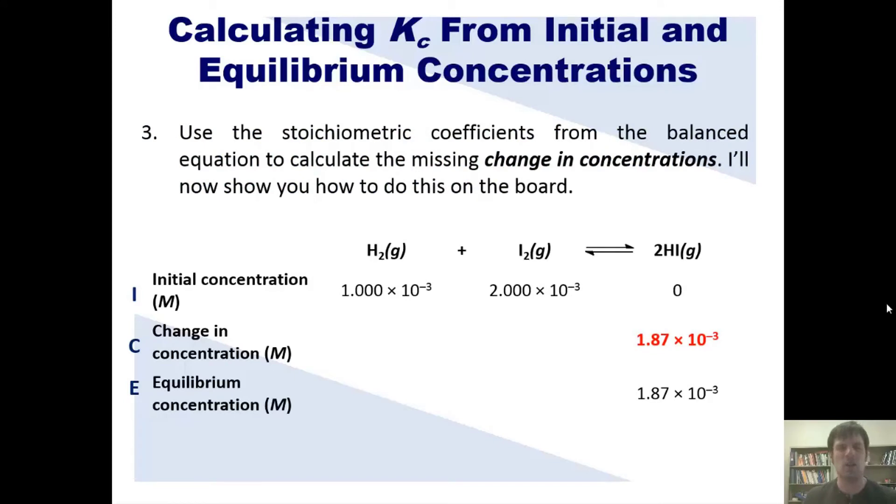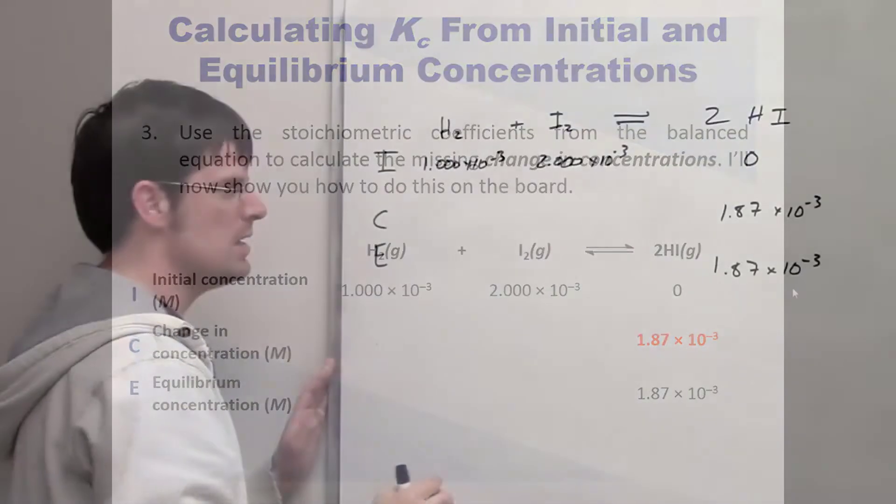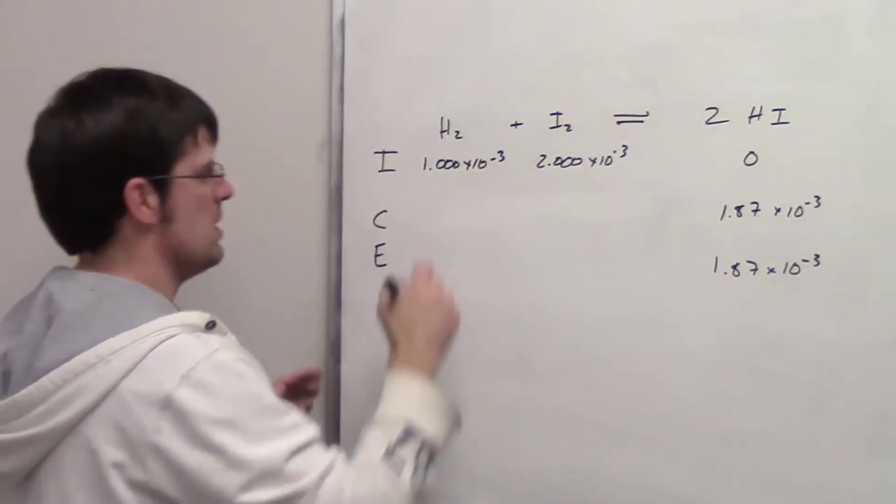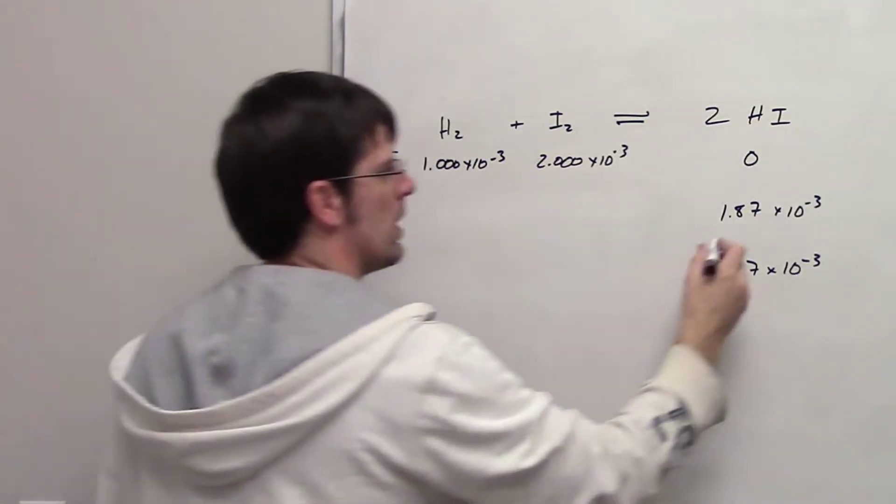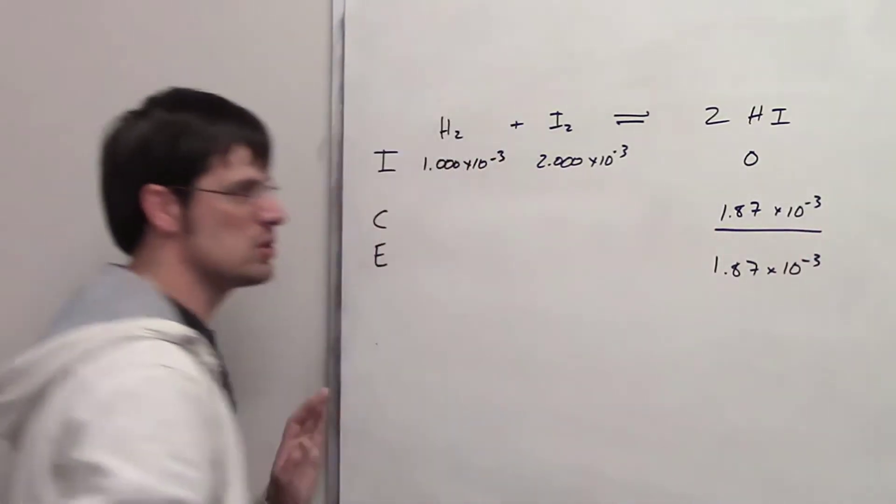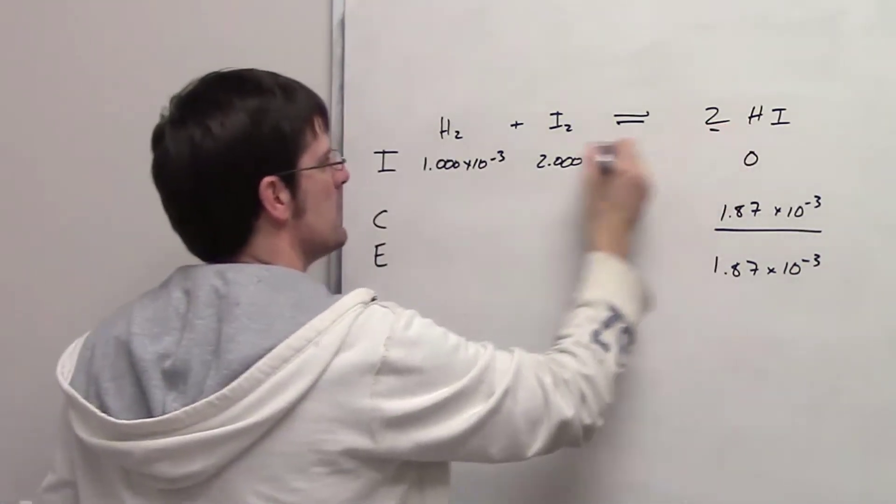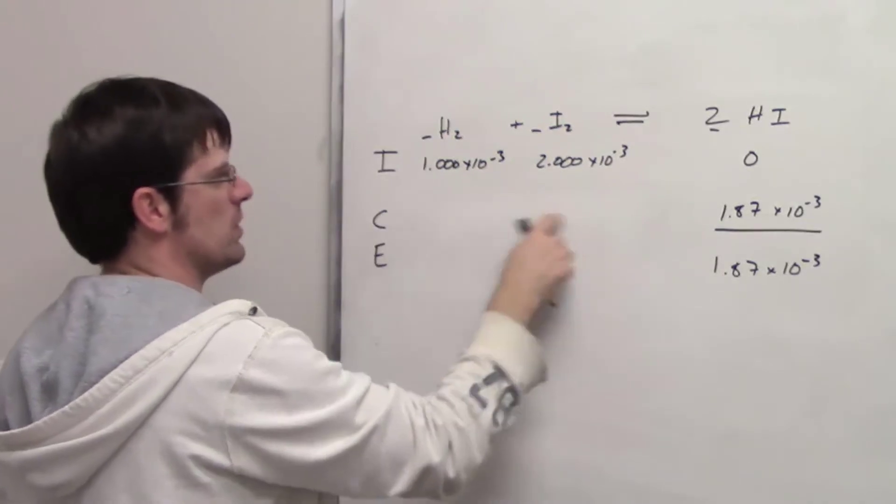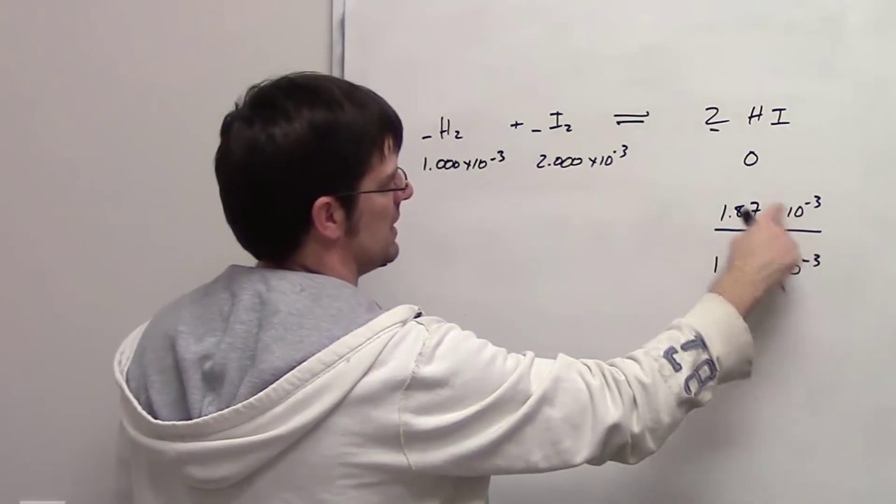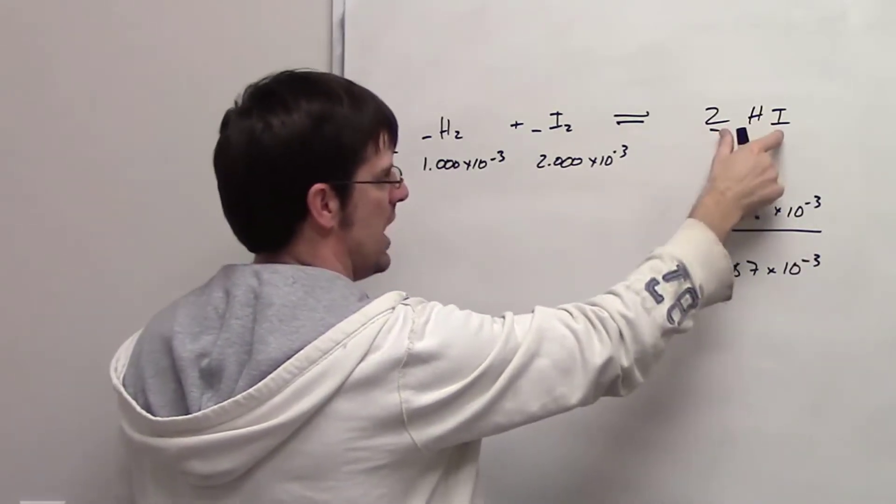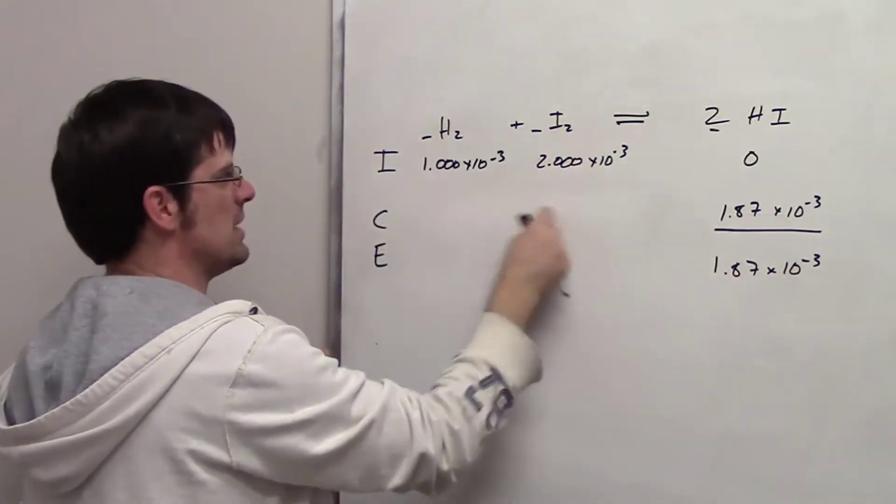Step three, use the stoichiometric coefficients from the balanced equation to calculate the missing change in concentrations right here. I'll now show you how to do this on the board. Now I have to fill in these two blanks right here and right here. How do I go about doing that? What I'll do is I'll use this number right here, the change in concentration for HI, and the stoichiometric coefficients here, here, and here, to determine what those numbers are. Assuming that I have produced 1.87 times 10 to the negative third molar equivalence of HI, what would the molar equivalence need to be for each of these substances?